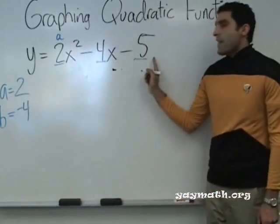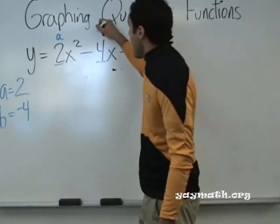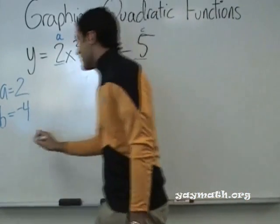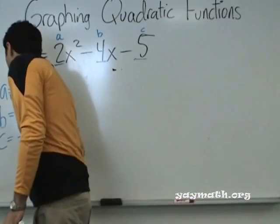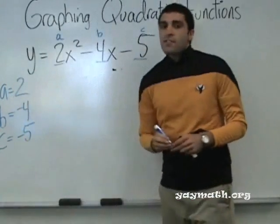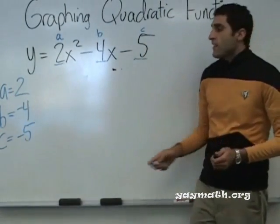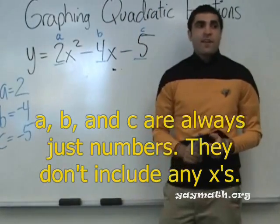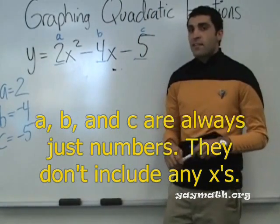What's the value of C? It's out here. Negative 5. Negative 5. C is negative 5. Okay, so that's crucial. Identifying A, B, and C. A, B, and C are always numbers. Not X or X squared or anything like that.